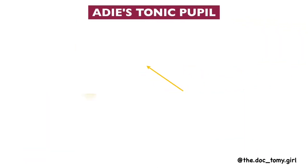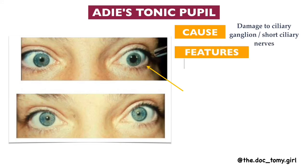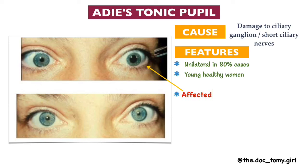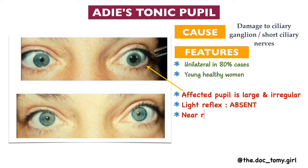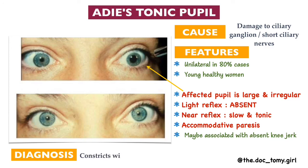The last condition is the Adie's tonic pupil, caused by damage to the ciliary ganglion or short ciliary nerves. The clinical features are: the condition is unilateral in 80% of cases and is seen in young healthy women. The affected pupil will be large and irregular. Light reflex will be absent, and the near reflex will be present but slow and tonic. Accommodative paralysis will be present. The intact near pupillary reflex is due to the fact that the ratio of fibers controlling the near reflex is much greater than those controlling the light reflex. Knee jerk reflex will also be absent. Diagnosis is done by testing for constriction with weak pilocarpine drops — a normal pupil will not constrict but an Adie's pupil will, because the denervated iris sphincter is supersensitive to topical parasympathomimetics.